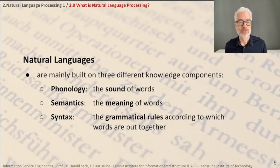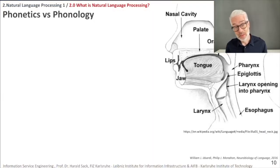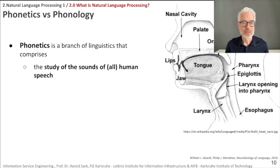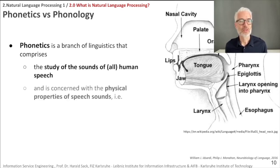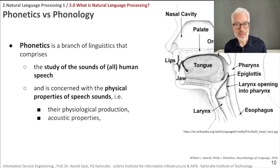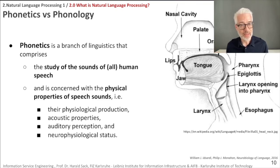There is another subject called phonetics, which is quite similar to phonology but not exactly the same. Phonetics is a branch of linguistics comprising the study of the sounds of all human speech — concerned with all the physical properties of speech sounds and their physiological production, requiring the vocal chords, breath, tongue, lips, and body resonance. It also covers acoustic properties such as frequency, pitch, harmonics, and volume, as well as auditory perception — how the ear and inner ear work and the neurophysiological connection from the ear to the brain.